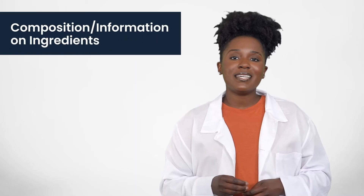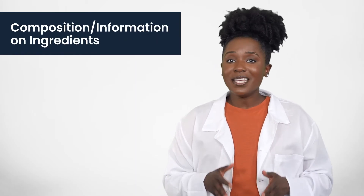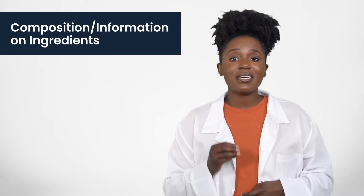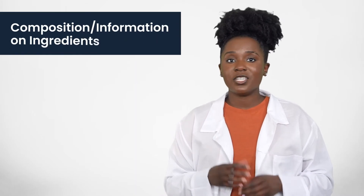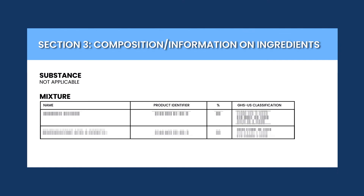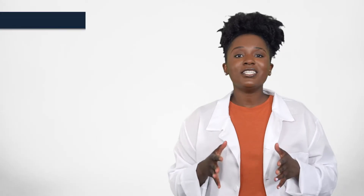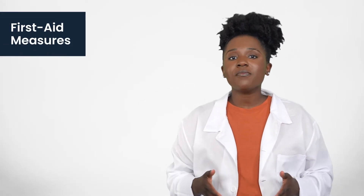Section 3 of the SDS provides detailed information on the chemical composition of the product. It lists all the ingredients in the product and their concentration as a percentage of the composition. Note that some specific concentrations may be legally withheld as a trade secret.